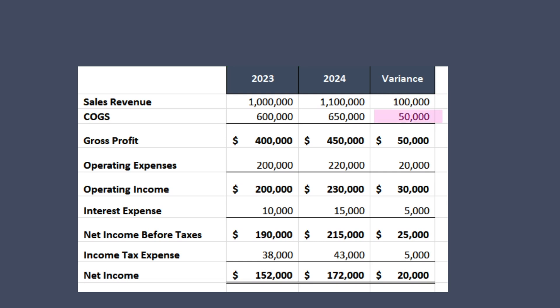The cost of goods sold increased by $50,000, which could indicate higher material costs or increased production. Despite the rise in COGS, gross profit increased, suggesting that sales growth outpaced the increase in production costs — perhaps a successful pricing strategy. Operating income increased by $30,000 but at a slower rate than gross profits, suggesting higher operating expenses. Interest expense rose by $5,000, which could impact net income if not managed. Net income increased by $20,000, showing improved profitability overall despite higher interest and operating costs.